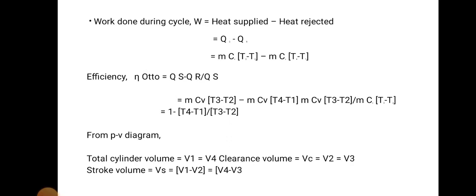The work of the cycle W equals heat supply minus heat rejection: W = m·C_V·(T3 − T2) − m·C_V·(T4 − T1). The efficiency formula for the Otto cycle equals work output divided by heat input: η = (Q_S − Q_R) / Q_S. Substituting and cancelling the common m·C_V term, we get: η = 1 − (T4 − T1) / (T3 − T2).